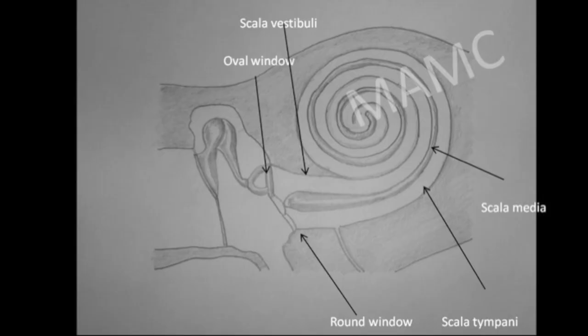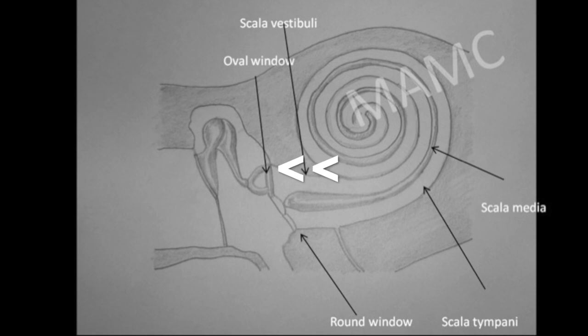The sound waves are conducted via the ossicles — malleus, incus, and stapes — through the oval window to the perilymph in the vestibule and scala vestibuli of the cochlea. These fluid waves get transmitted to the endolymph of the cochlear duct, which is the scala media, where basilar membrane displacement stimulates the hair cell receptors of the organ of Corti. The electrical signal is then sent via the cochlear nerve to the auditory cortex.